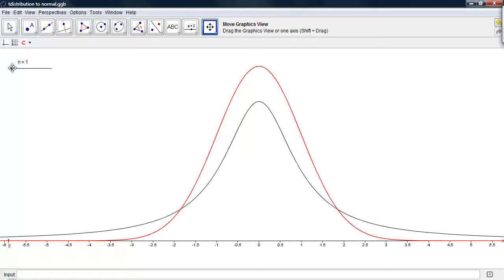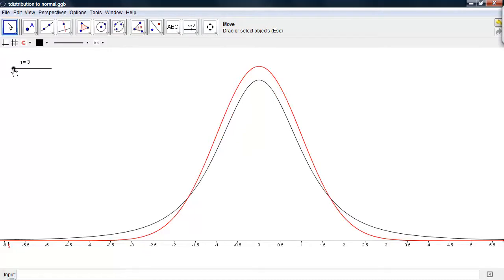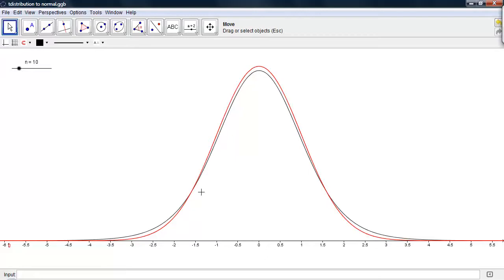If I increase the degrees of freedom to 10, we can see that the t-distribution is getting closer to the shape of the normal distribution. There's still some space between the tail ends and the peaks, but there's much less of it.